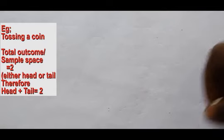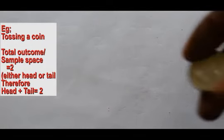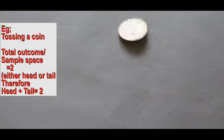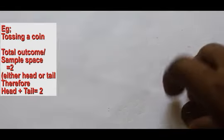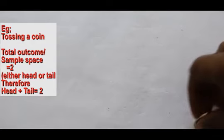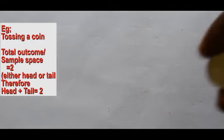If we take a simple example of tossing a coin, we know that a coin has two sides, that is the head and the tail. So in this case, the sample space or what we call the total outcome is two, because we are adding the head and the tail to come up with two possible outcomes.